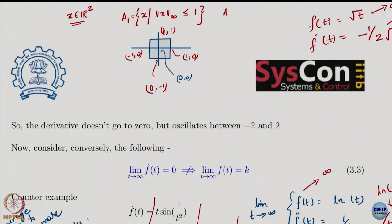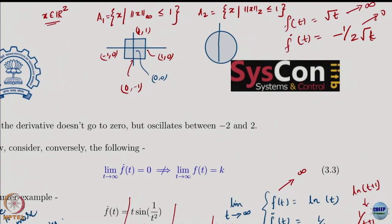What about A_2 = {x : ‖x‖_2 ≤ 1}? Everybody knows this very well — it is a disk of radius 1 centered at the origin. The equation is x₁² + x₂² ≤ 1, so it is the filled disk, not just the circle boundary.